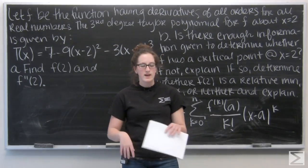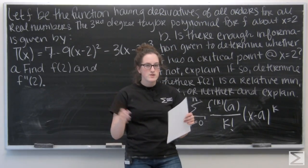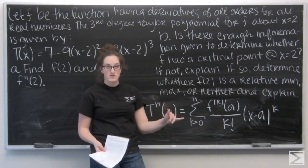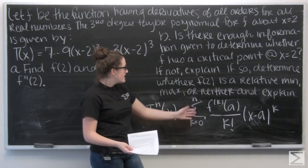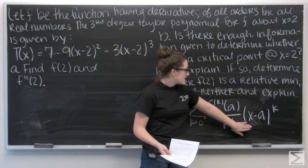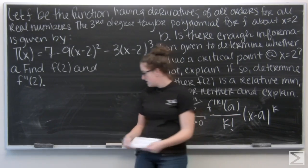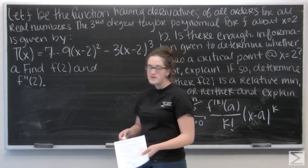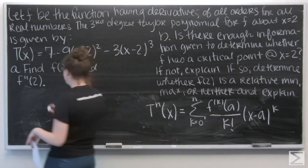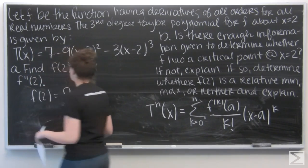So, if I can think about that, how it applies to this, I know that the first term that's all by itself, just a constant, is going to be my actual function value. Right, because if I plug in k equals zero, I get the original function, and then x minus a to the zero is one. So, I don't have any x's. So, that means f of two has to be seven. Right, because it's just the number there.